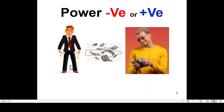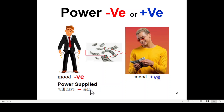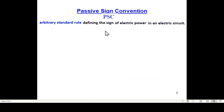Assume this guy is the father, and he is sending money to the son. Now, what will be the mood of the father? Obviously it will be negative — he has gone bankrupt almost. And what will be the mood of the son? Obviously it will be positive. If you relate this to power, then power supplied will have a negative sign, and opposite of that, power consumed will have a positive sign. So this is one point to keep in mind. There is another one called the passive sign convention, PSC for short. This is an arbitrary rule defining the sign of electrical power.